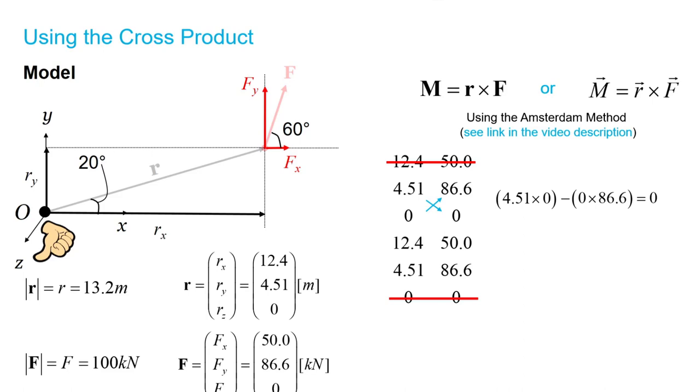So, in this method, if it's a downwards diagonal multiplication, it's positive. If it's an upwards diagonal multiplication, like here, it's downwards from 4.51 to 0 and upwards from 0 to 86.6, we get positive and negative. Now, these products are all multiplied by 0, so the final result is 0.